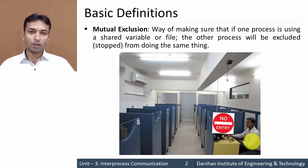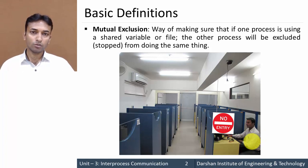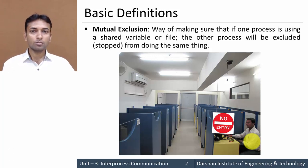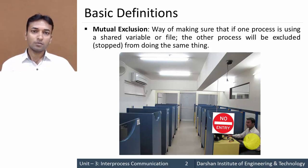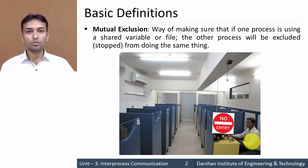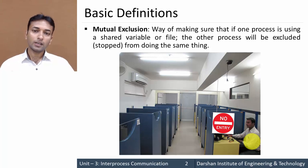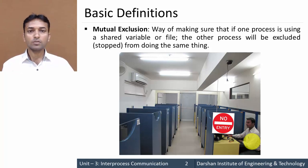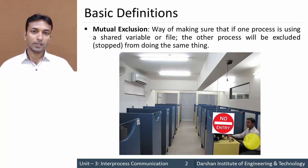In the same way, whenever more than one process is using the shared resource, if the first process starts to use that resource, it will create a system that prevents other processes from using that same resource until the first process finishes its execution. That way of making sure that other processes are not using the shared resource is known as mutual exclusion.